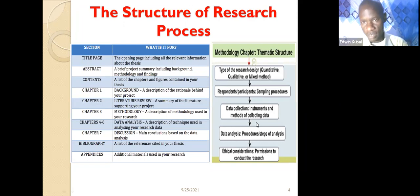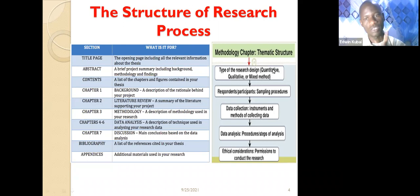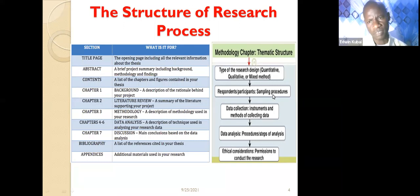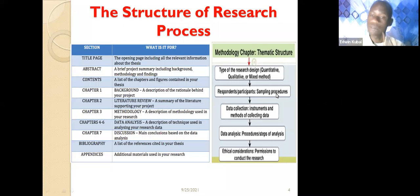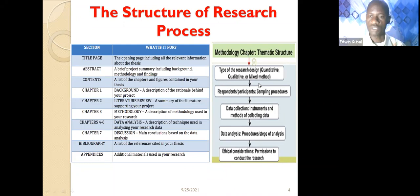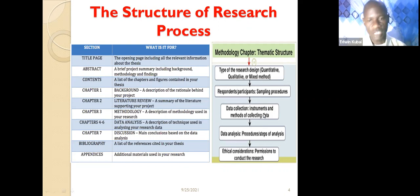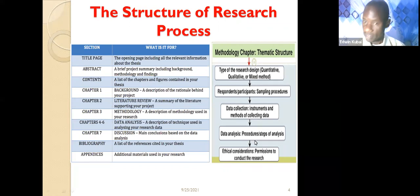In the methodology part, you look at the type of research design — whether quantitative, qualitative, or mixed method — and the respondents, participants, and sampling procedures. Which methods are you going to use to identify participants? Which sampling procedures will you use? Methodology is a very significant chapter in research work. For data collection, you must specify the instruments you'll use, whether questionnaires, interview schedules, or observations — you must tell us which data collection tools you are using.